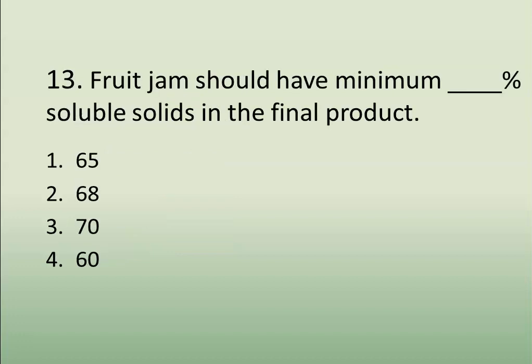Question number thirteen: Fruit jam should have a minimum percentage of soluble solids in the final product. Options are 65, 68, 70, or 60. And the correct answer is 68.